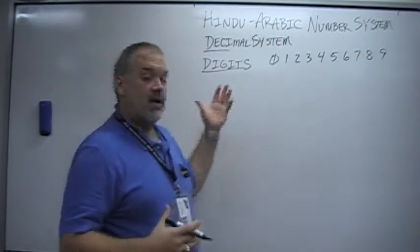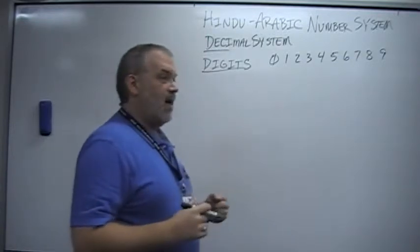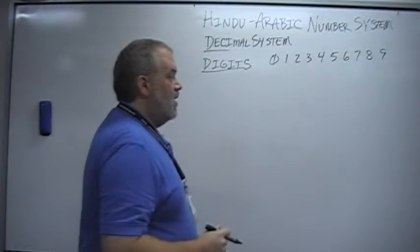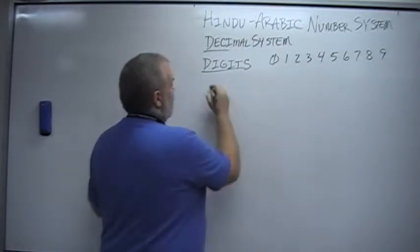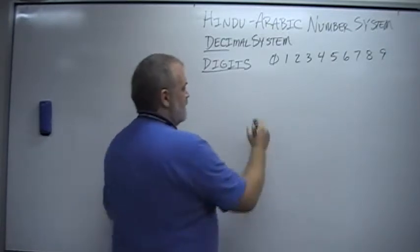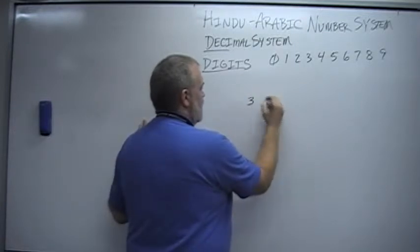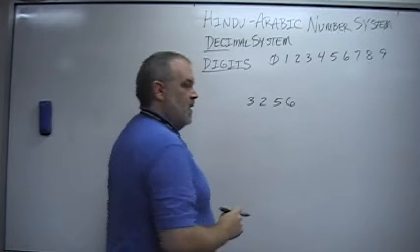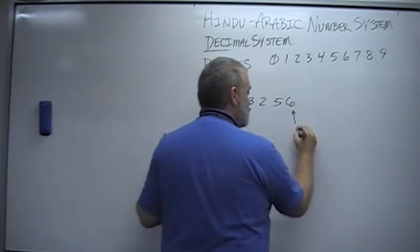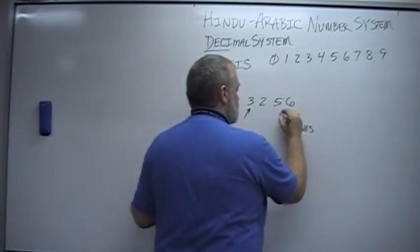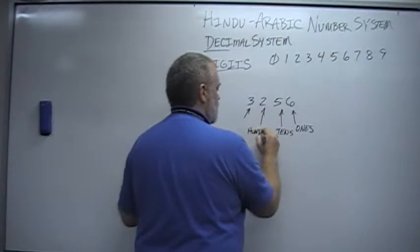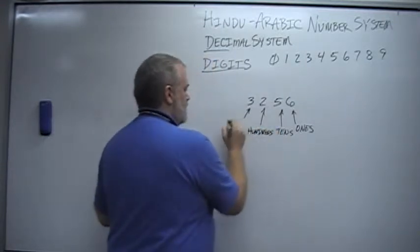Now, when we talk about place value in the Hindu-Arabic number system, what we're talking about is the numbers that we're dealing with and their place in that number. So, for example, you are probably familiar with the values of each place. Let's use this number: 3256. This is the ones place, this is the tens, this is the hundreds, and this is the thousands.